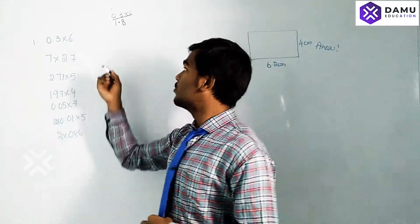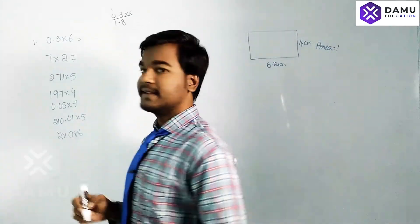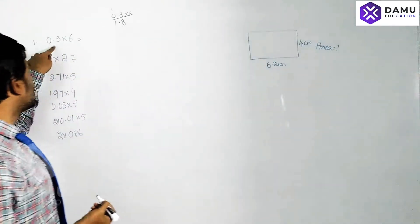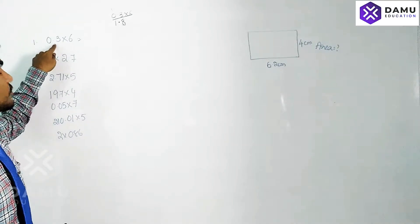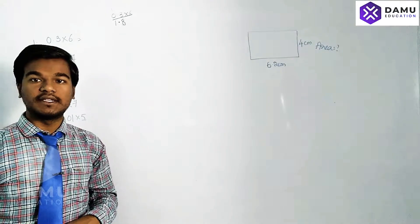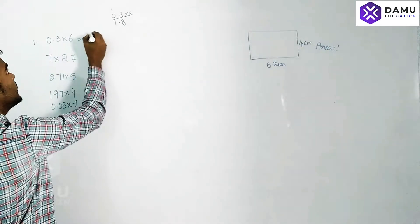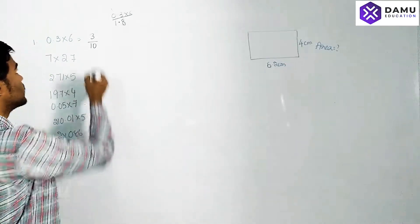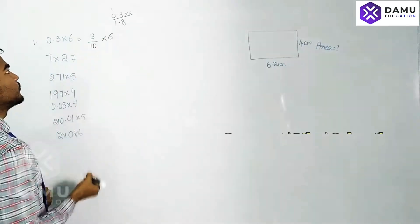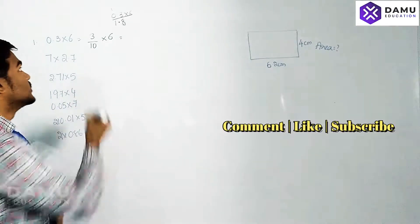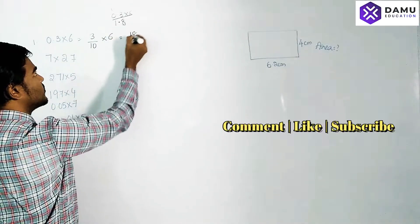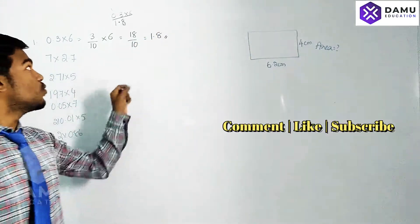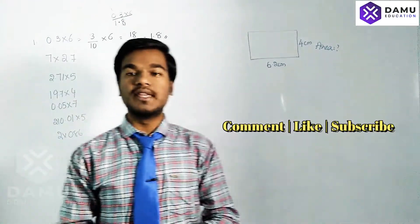Next method: we convert 0.3 into a rational number. After the point only one decimal place is there, so we write it as 3 by 10. So 3 by 10 into 6 equals 18 by 10, which equals 1.8. Ten ones are 10, and the remaining 8 will be after the point — so the answer is 1.8.